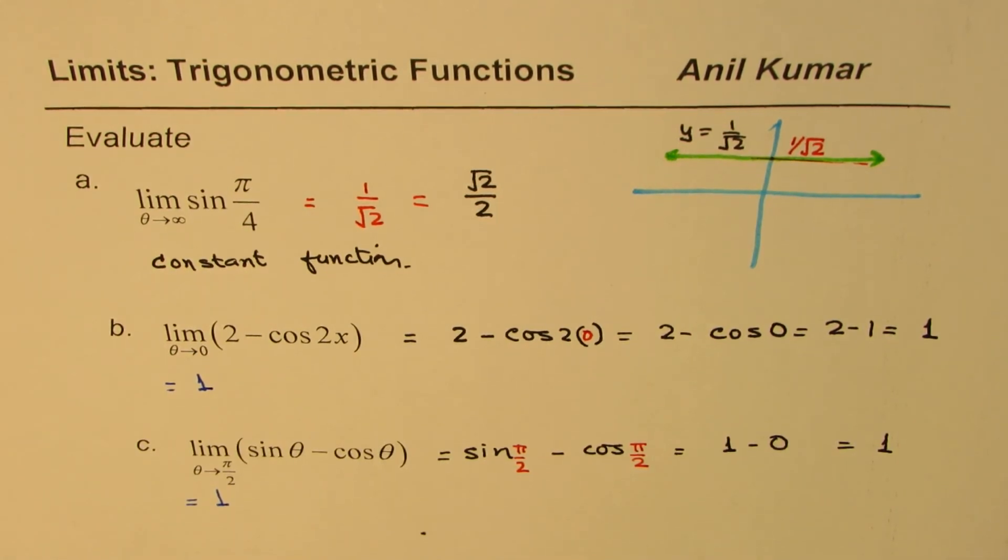Now in first three questions, we have found the limit by direct substitution or looking at the graph. Now we'll get into examples where sometimes trigonometric functions may be simplified to find the limit. I hope till now things are absolutely clear.